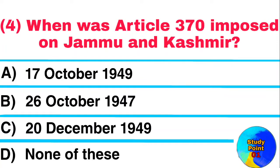Question: When was Article 370 imposed on Jammu and Kashmir? Answer: The 26th of October 1947.